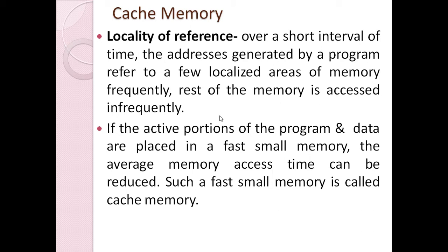This gives us the idea of cache memory: if the active portion of programs and data is placed in a fast, small memory, the average memory access time can be reduced. Such a fast small memory is called cache memory. The idea comes from one property of computer programs — locality of reference — which means that in a short time interval, the CPU references are local to a small portion of memory, not the complete program.